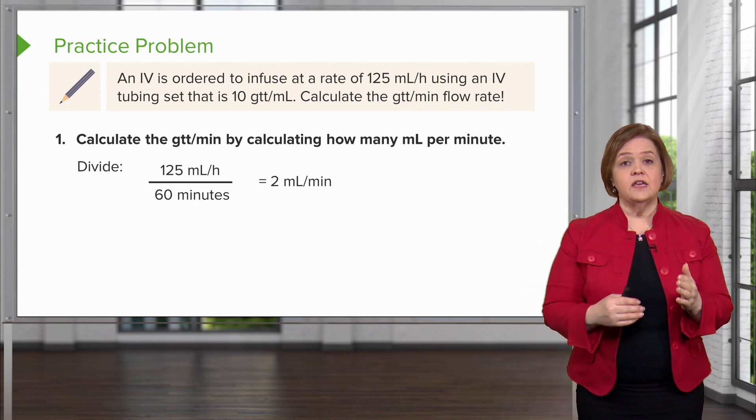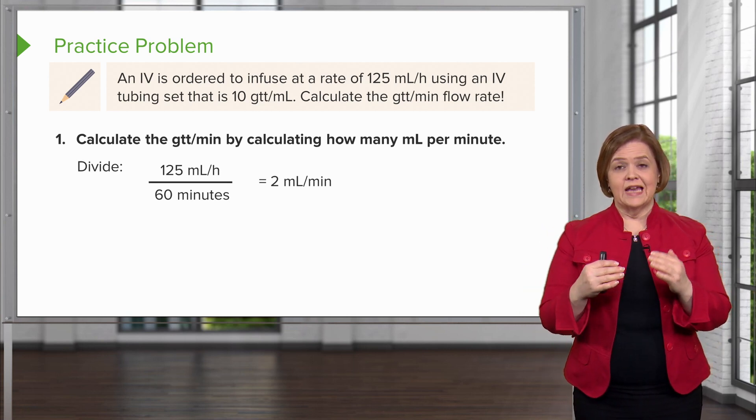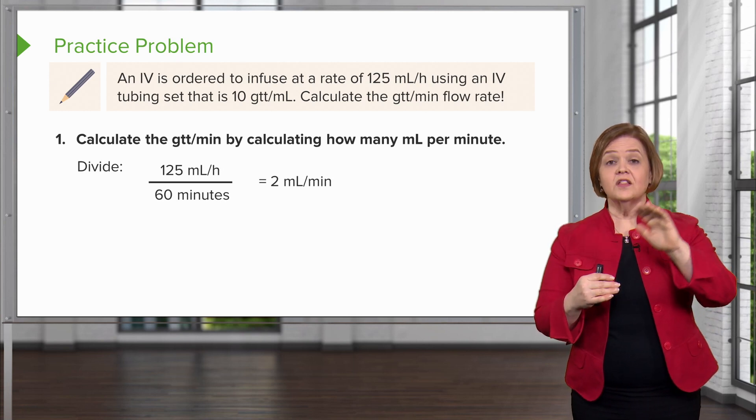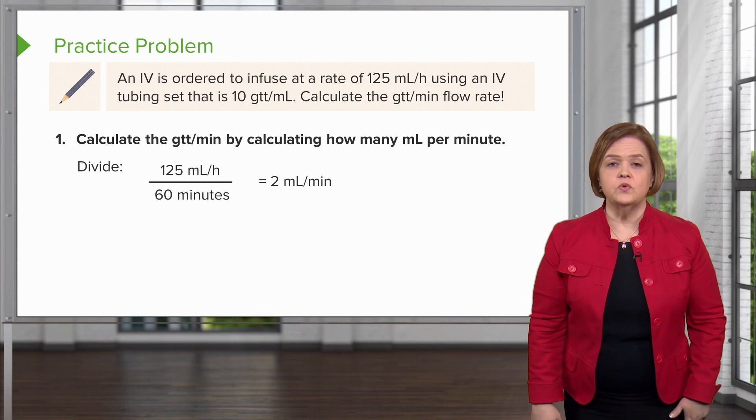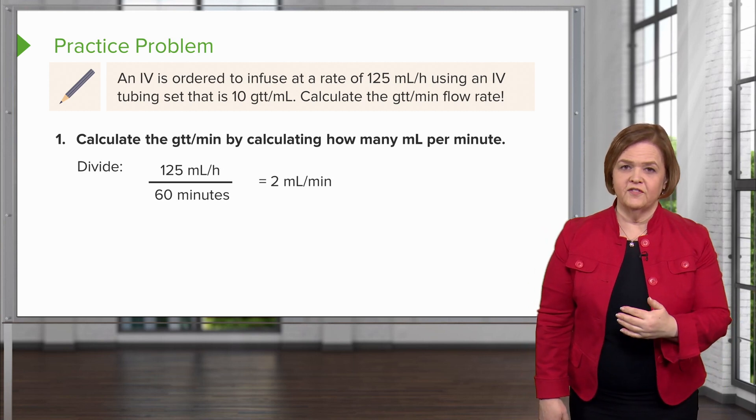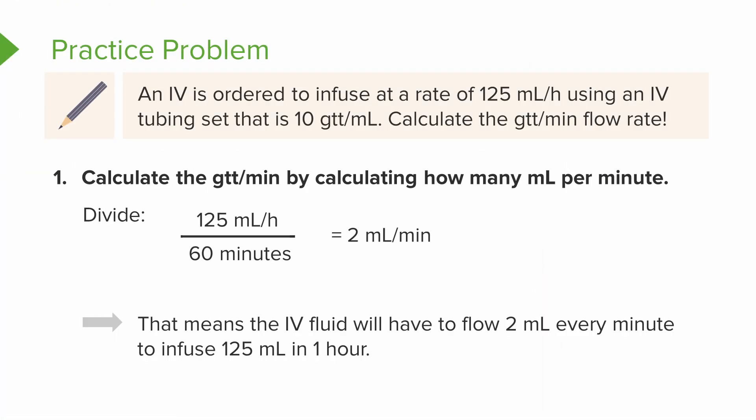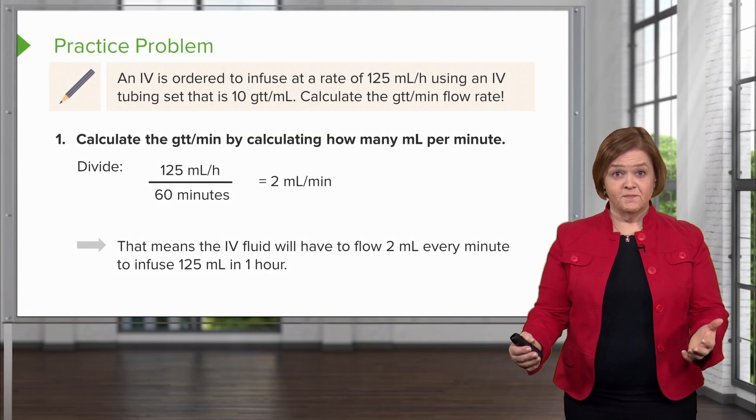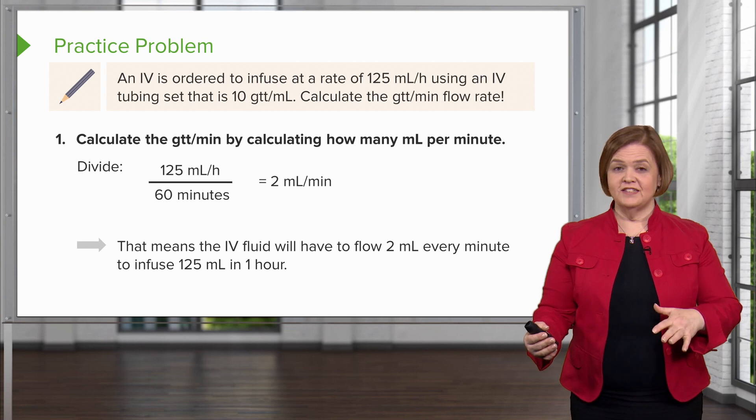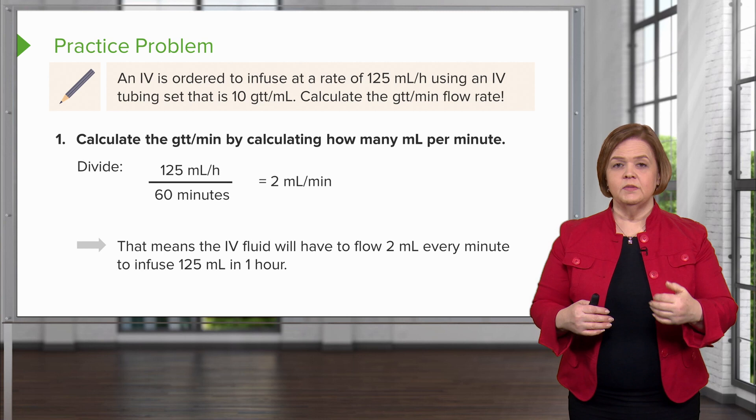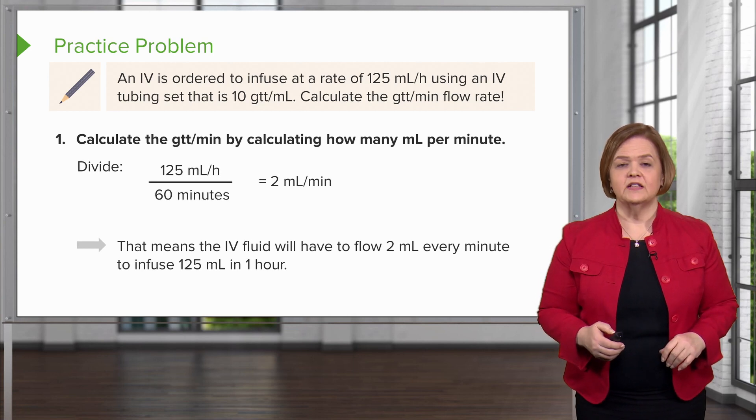We're calculating drops per minute by first finding milliliters per minute: 125 divided by 60. We can go with 2, even though there's a remainder. The IV fluid will flow 2 milliliters every minute to infuse 125 milliliters in an hour. We're using 2 milliliters per minute because we want to give 125 milliliters in an hour.